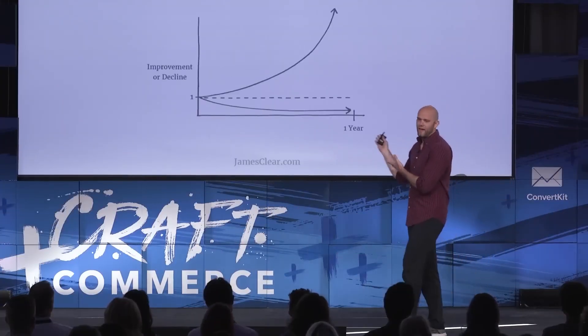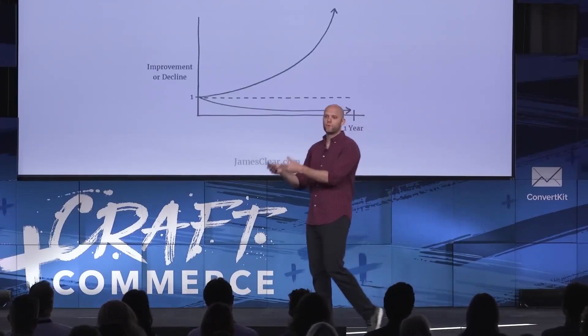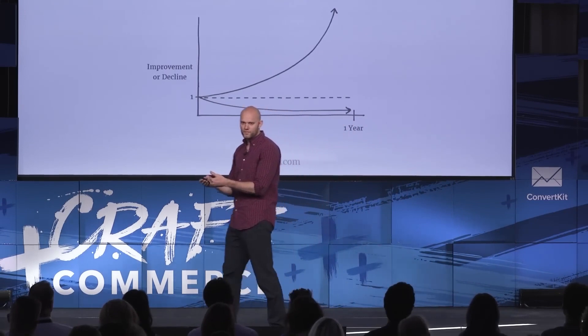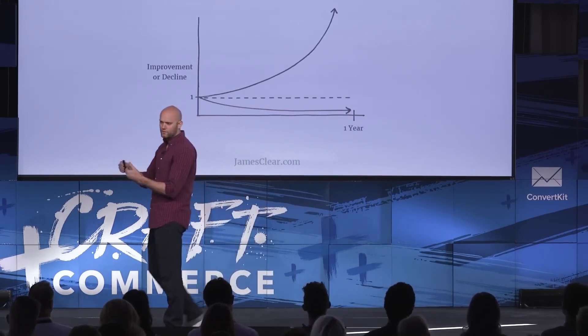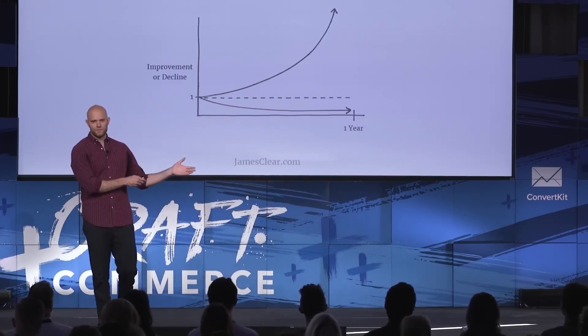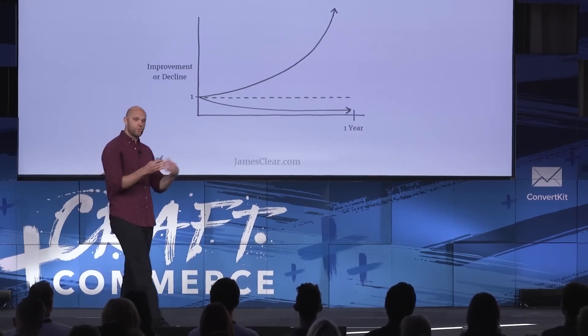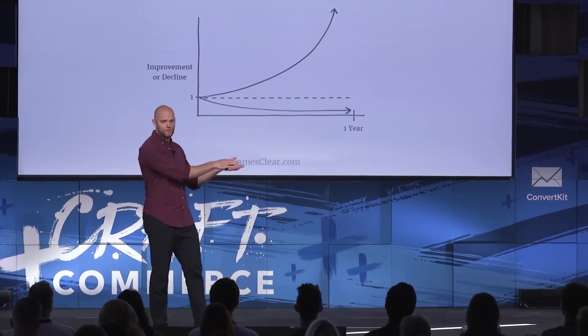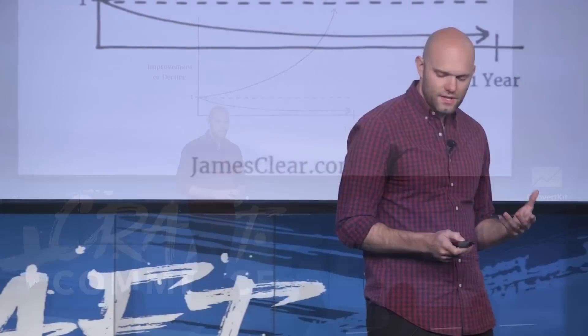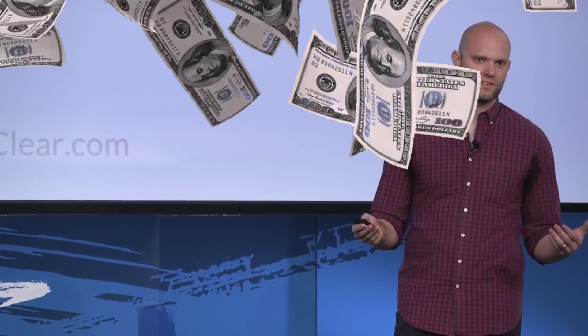One way to think about it is just basic math. If you were able to improve by 1% each day for an entire year and those gains compound, you would end up 37 times better at the end of the year. If you were to get 1% worse, you would whittle yourself almost all the way down to zero. What's interesting here is that everybody wants a transformation, but we fail to realize that small habits and little choices are transforming us every day.